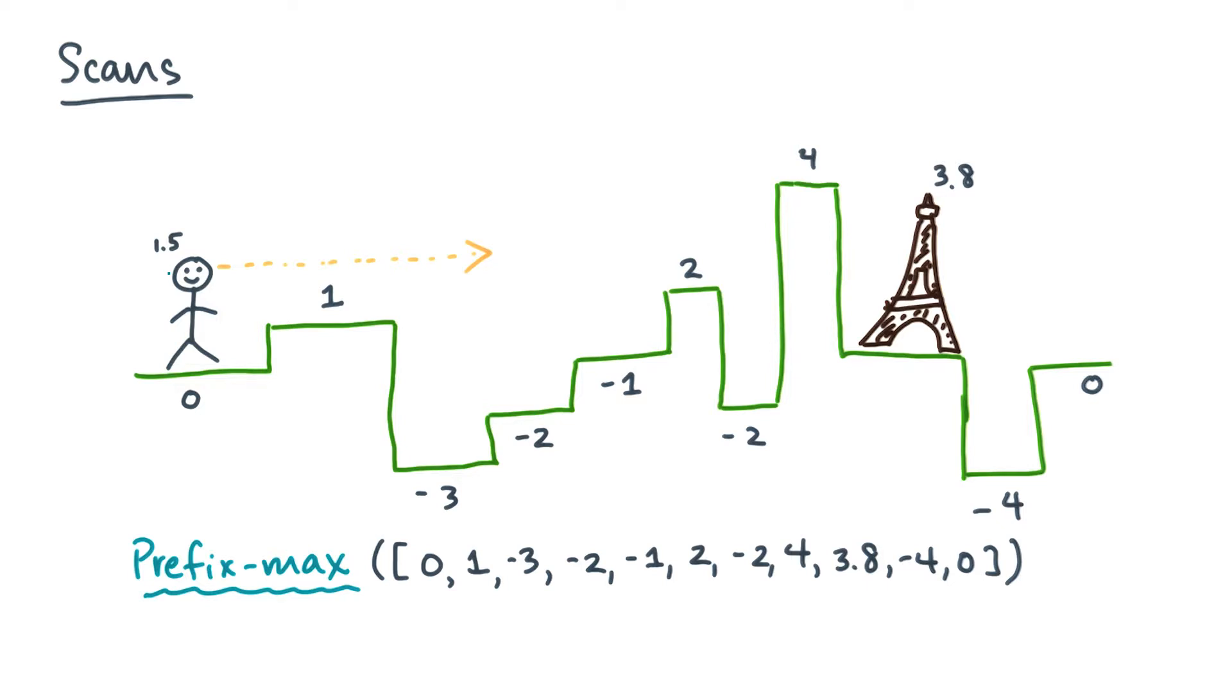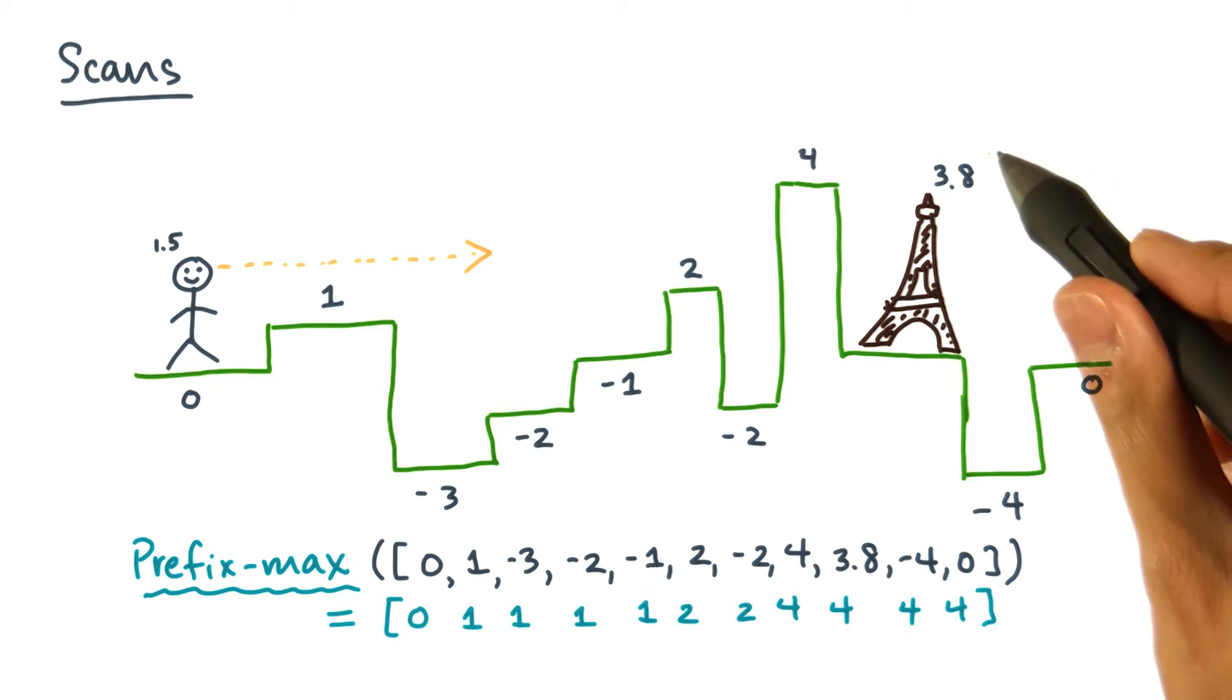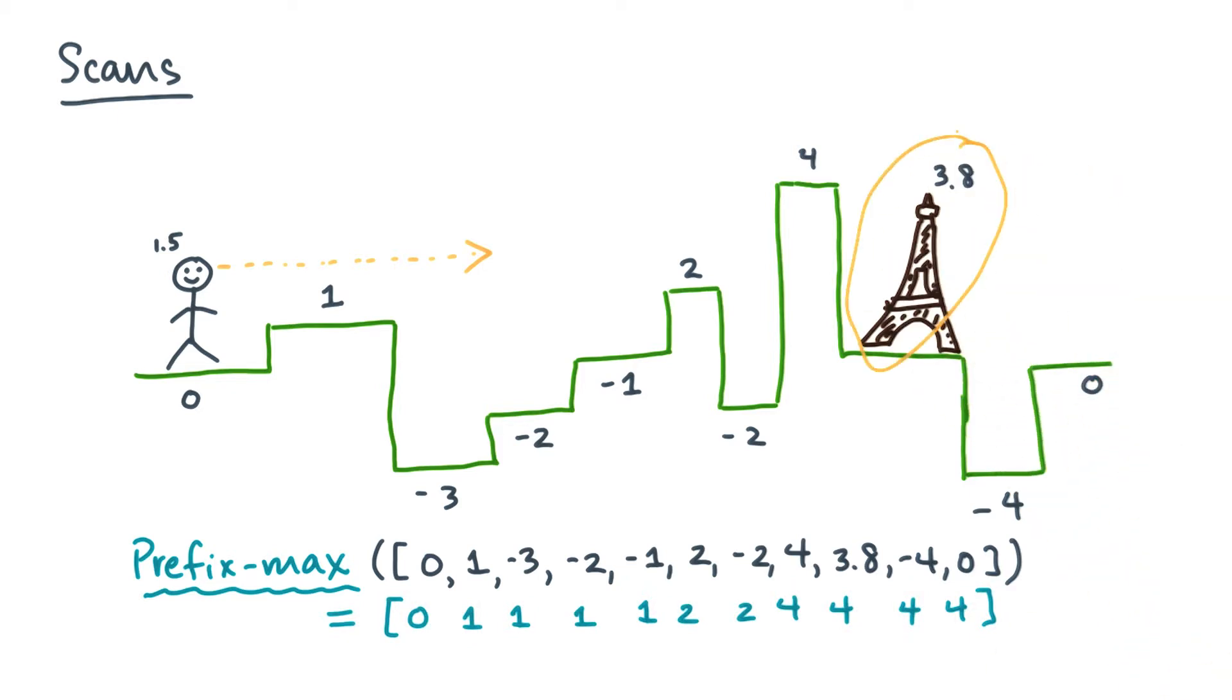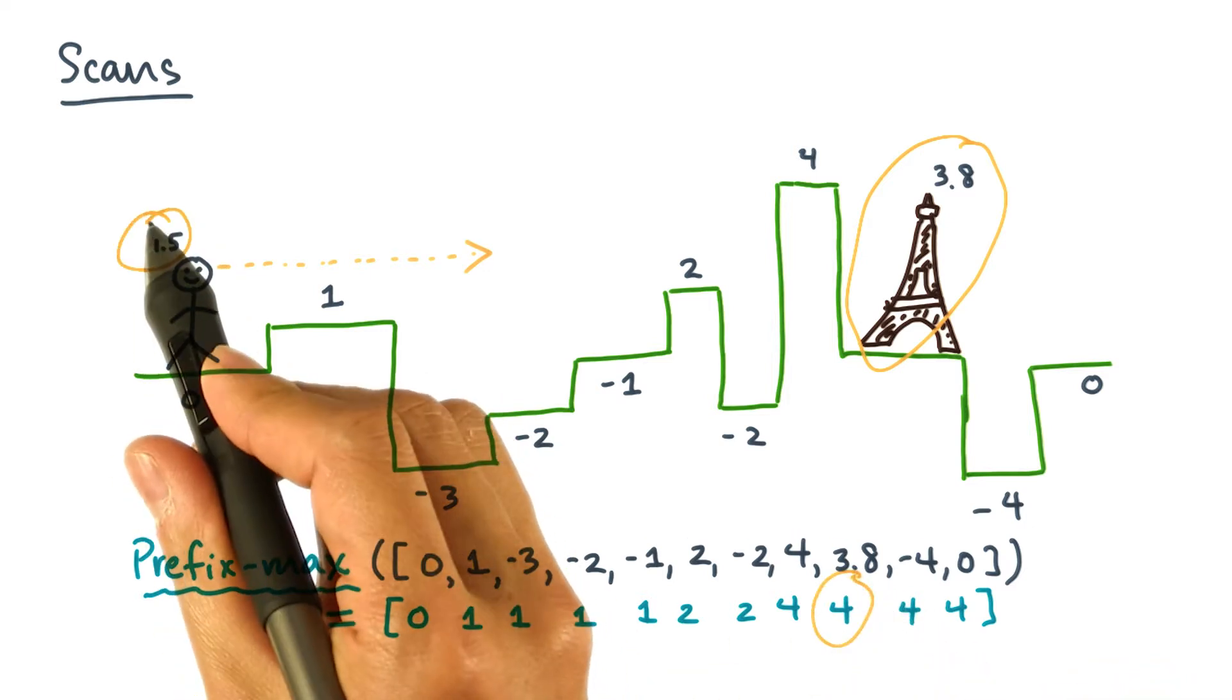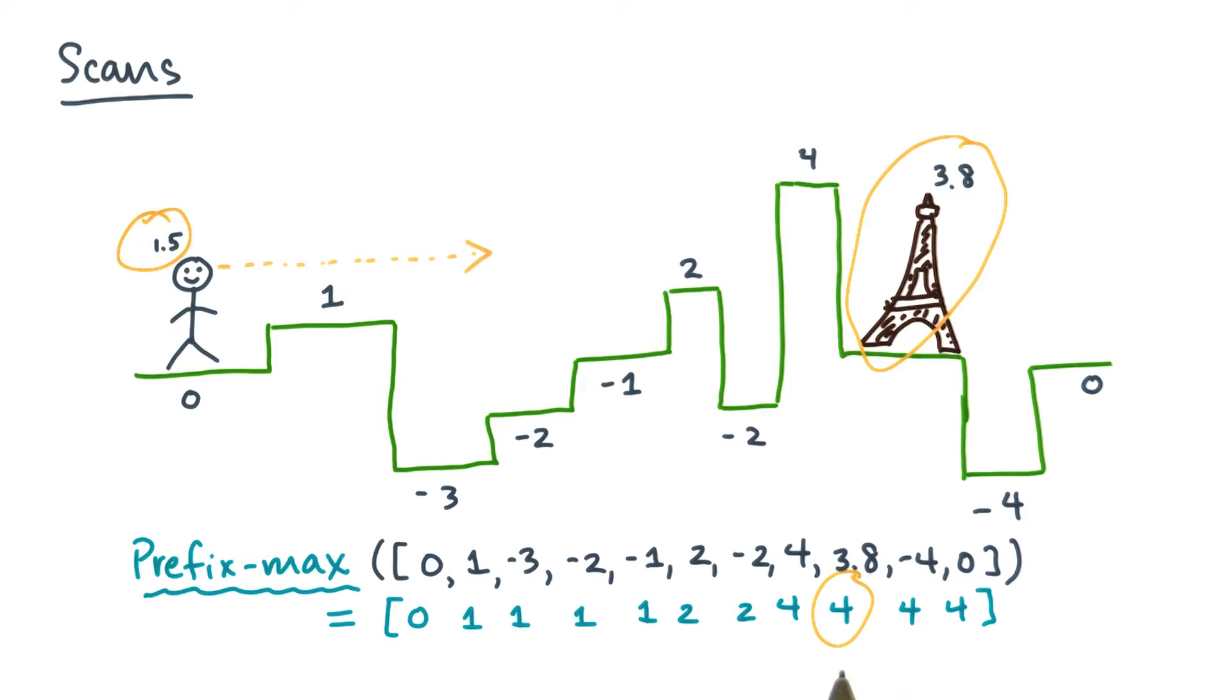Let's compute the cumulative max at each point. Now to figure out whether your friend could see this awesome landmark in the distance, just look at the maximum elevation at that point and compare it to your friend's height. In this case, 4 is a lot bigger than 1.5, so your friend has no hope of seeing my beautiful Eiffel Tower.